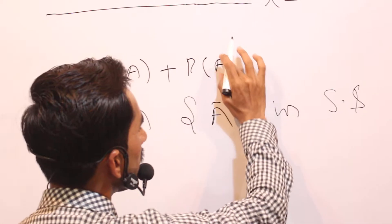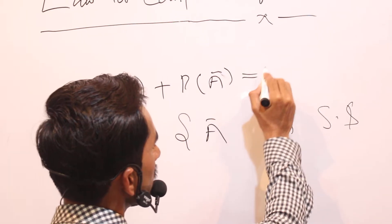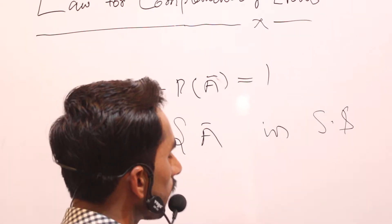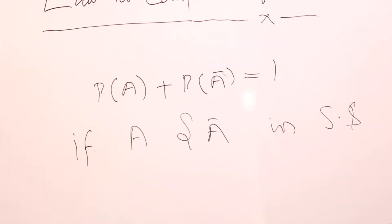The theorem states that probability of A plus probability of A-bar is equal to one.